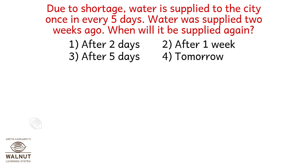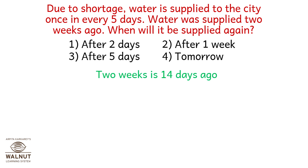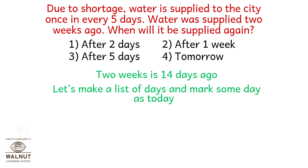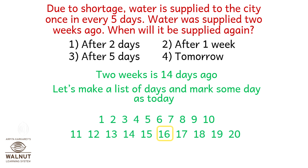Due to shortage, water is supplied to the city once every 5 days. Water was supplied 2 weeks ago. When will it be supplied again? 2 weeks is 14 days ago. Let's make a list of days and mark some day as today — let's say 16.